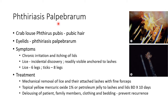Phthiriasis palpebrarum refers to infestation of the eyelids by crab lice (Phthirus pubis), which normally inhabit pubic hair. Symptoms include chronic irritation and itching of the lids. The lice are often an incidental discovery and are readily visible anchored to the lashes. Remember: lice have 6 legs whereas ticks have 8 legs. Treatment involves mechanical removal of lice and their attached lashes with fine forceps. Topical yellow mercuric oxide 1% or petroleum jelly can be applied to lashes and lids twice daily for 10 days. Delousing of the patient, family members, clothing and bedding is advised to prevent recurrence.